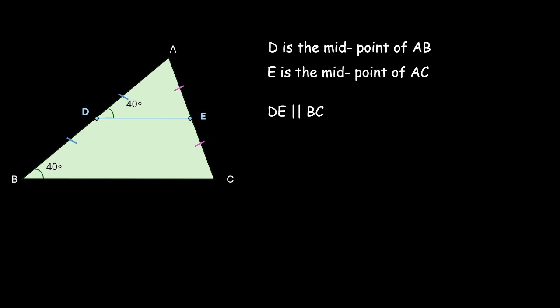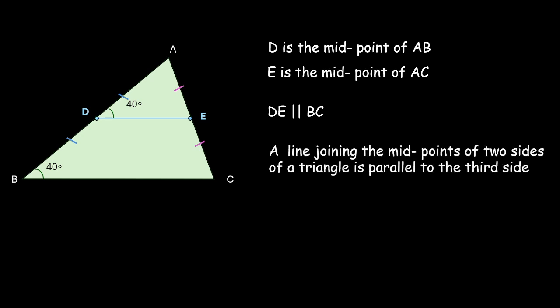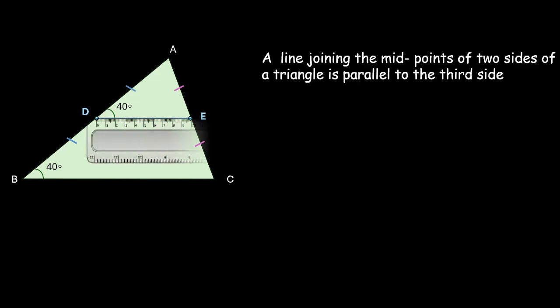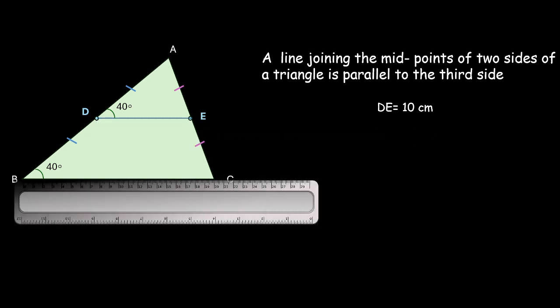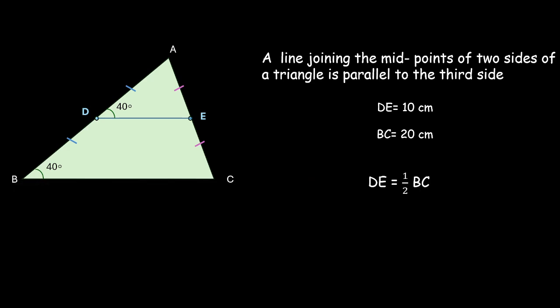Well, that's a great result. This actually means that if I just join the midpoints of two sides of a triangle and make a line, that line will be parallel to the third side. Let us also see if there is any kind of relation between DE and BC. Let's measure DE now. DE is 10 centimetres and BC is 20 centimetres — DE is exactly half of BC.